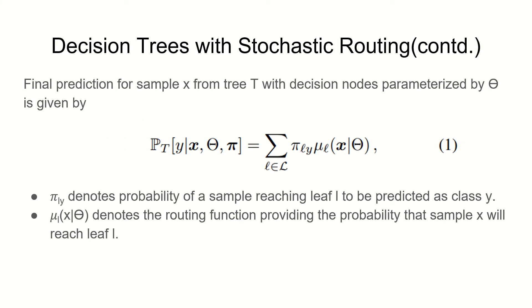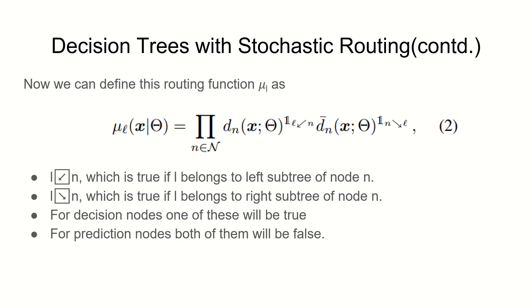With all this we can write the final prediction for sample x like this. In equation 1, on the right hand side we can see pi_L(y) which represents the probability of a sample reaching leaf L to be predicted as class Y, and mu_L(x) denotes the probability of sample x reaching leaf L.